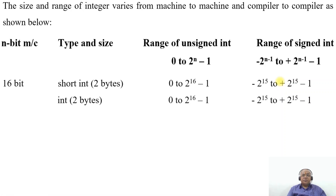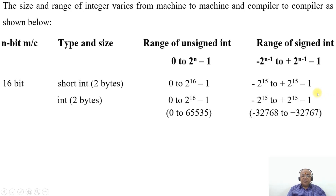Similarly, for int of 2 bytes: unsigned int ranges from 0 to 65535, and signed int ranges from minus 32768 to plus 32767.